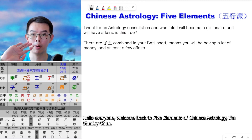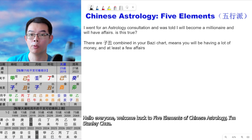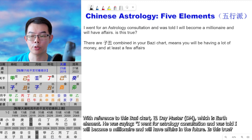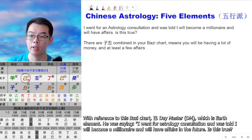Hello everyone, welcome back to 5 Elements of Chinese Astrology. I'm Sen Lichua. With reference to this Ba Zi chart, Ji Day Master, which is Earth Elements.